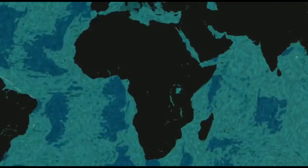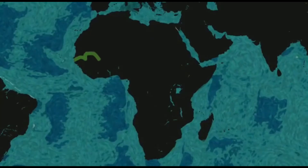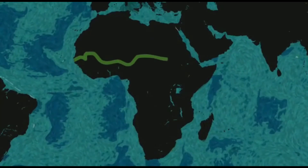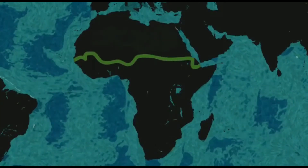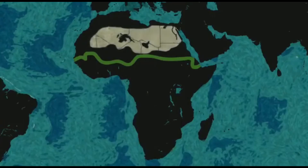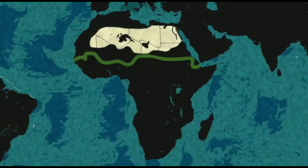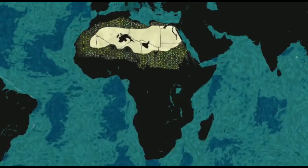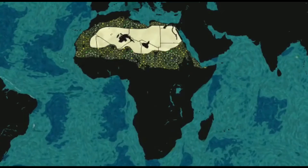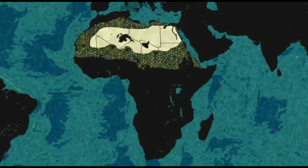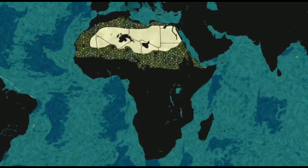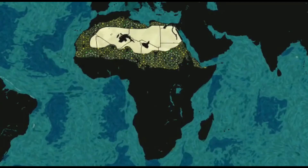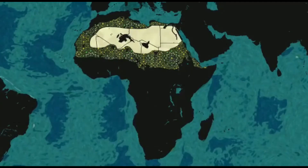In 2007, African heads of state endorsed the Great Green Wall initiative. The original idea was to plant a belt of vegetation along the southern edge of the Sahara. That idea has since evolved into a mosaic of interventions designed to restore degraded land and to improve plant diversity and land productivity in African drylands.